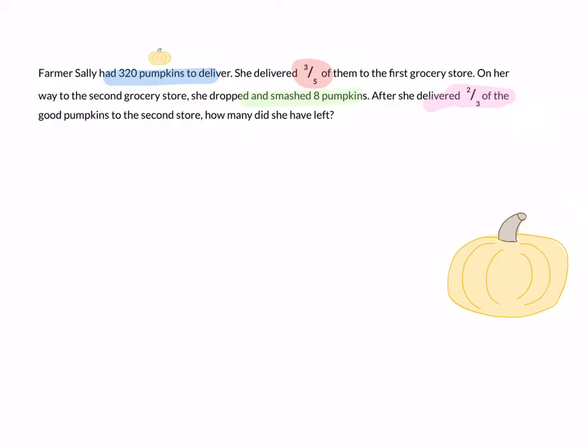Okay, so here's what we're going to do. First of all, since I know I've got 320 pumpkins, I can make a bar model and I can label it 320. That's all the pumpkins, right? Everything.